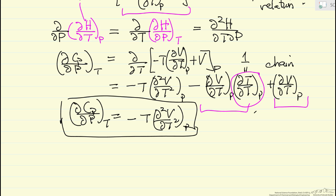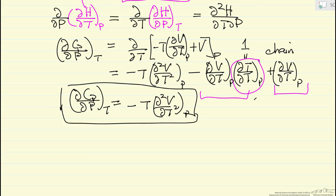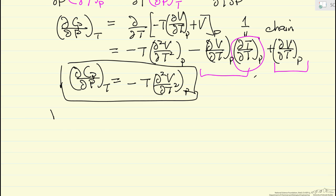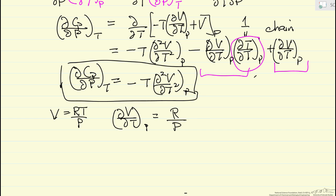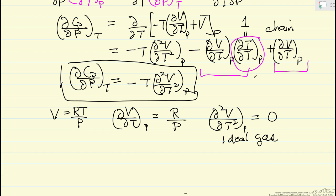This was our original goal — we can now take an equation of state and evaluate this derivative. Let's use the ideal gas law, where the specific volume V equals RT over P. The derivative of V with respect to T at constant pressure is just R over P, a constant. The second derivative of V with respect to T at constant pressure is then the derivative of a constant, so it's zero. This tells us that for an ideal gas, heat capacity does not depend on pressure — it only depends on temperature.